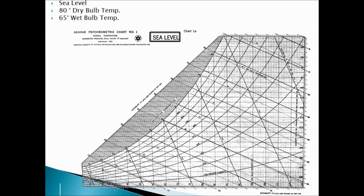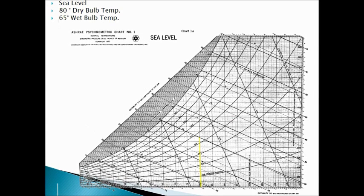Next, we need to identify the other two properties. The angled lines are lines of constant wet bulb temperature and the vertical lines are lines of constant dry bulb temperature. If you look in the top left-hand corner, we remind ourselves of our defined point.